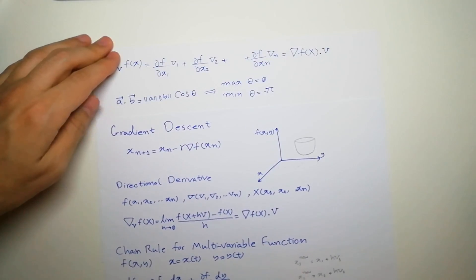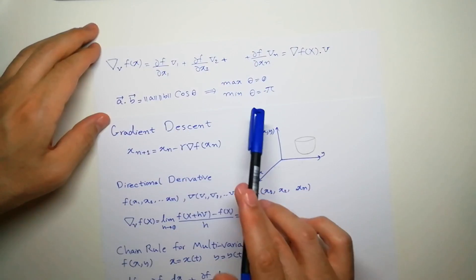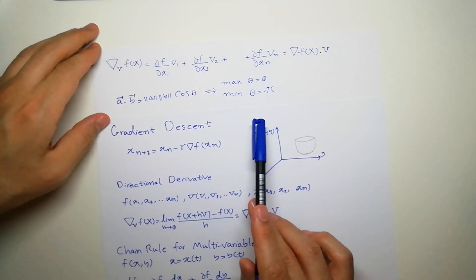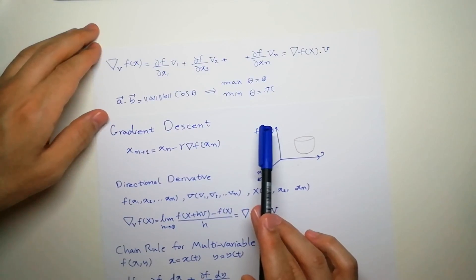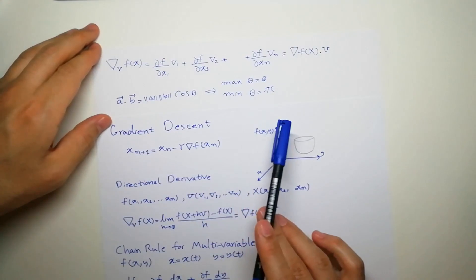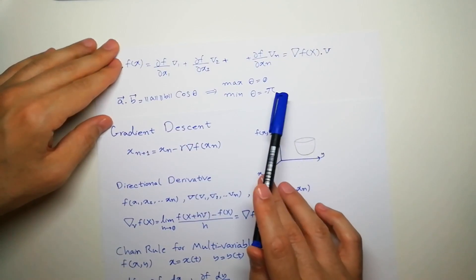We know that dot product is maximized when the angle between two vectors is zero, and minimized when it's minus theta. So if you want to get this minimized, the best value is minus π.